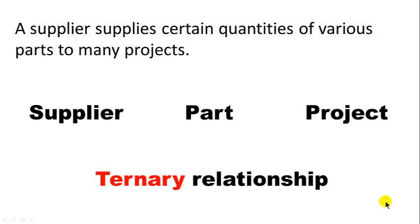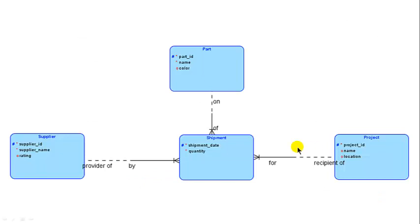In this case, we look at the sentence and say it's really talking about a shipment — and therefore that shipment will be our associative entity. We connect supplier, part, and project to the shipment. Whenever you have a relationship of degree three or more, there is no direct representation on the ER diagram; you have to break it up into several binary relationships. Here we took the ternary relationship and broke it into three binary relationships: supplier to shipment, part to shipment, and project to shipment.